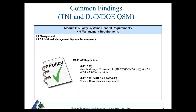Also under 4.2 management, for California ELAP there are specific quality manager requirements and quality manual content requirements that we frequently see findings for. If you're California ELAP, review the regulations for any requirement saying 'the quality manual shall contain' or 'identify,' and any training requirements — make sure those are captured somewhere.